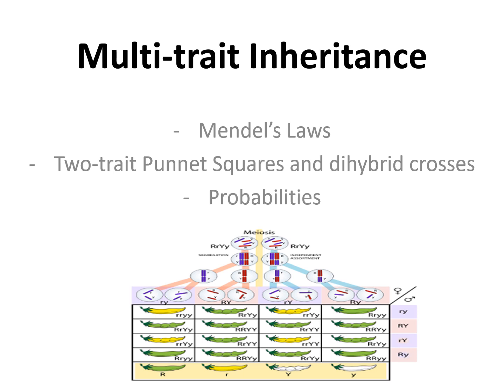Multi-trait inheritance — we're going to be looking at Mendel's laws, two-trait Punnett squares which will also include dihybrid crosses, and then just a quick discussion about probabilities.